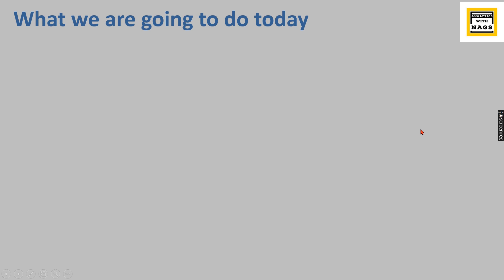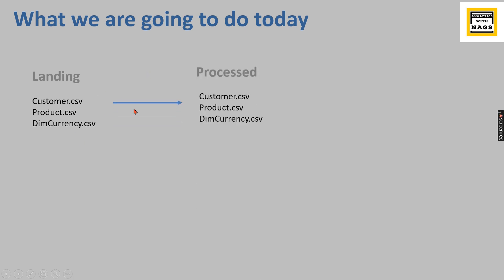What we are going to do today: we have three files in the data lake that we consider as a landing zone. Once we want to move or archive them, we will perform certain actions. Once the task is done, we need to move the files into a processed folder, and once moved, we will delete them from the source area.